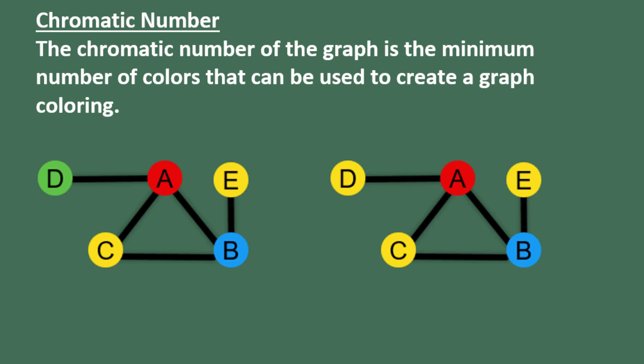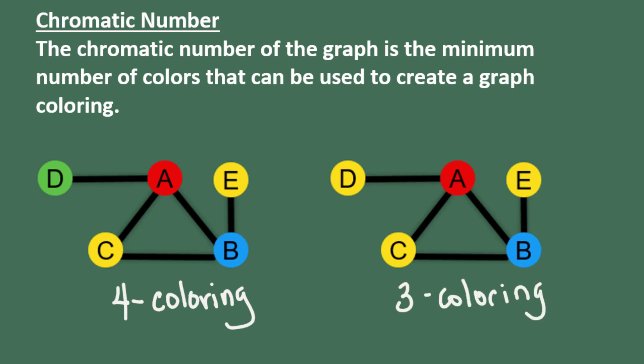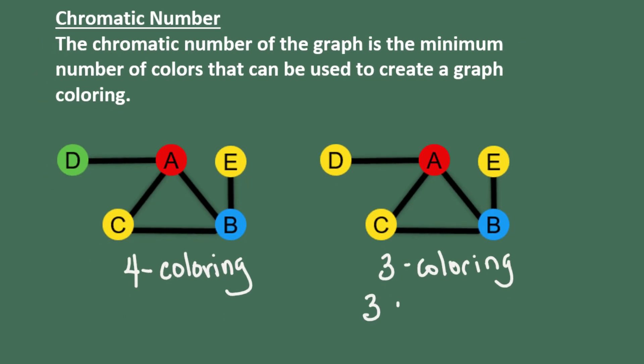For example, the graph on the left is a graph coloring which uses four colors — it's a four coloring. On the right, we have a three coloring of the same graph, and it turns out that this is the minimum number of colors needed to color this graph so that any two adjacent vertices are different colors. That means that three is the chromatic number for this graph.